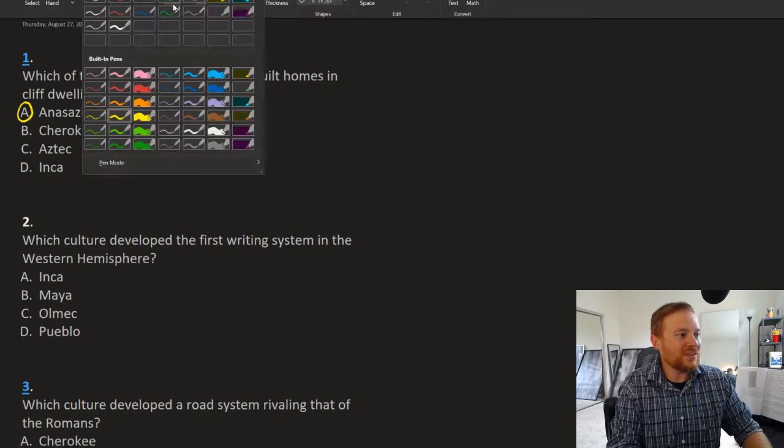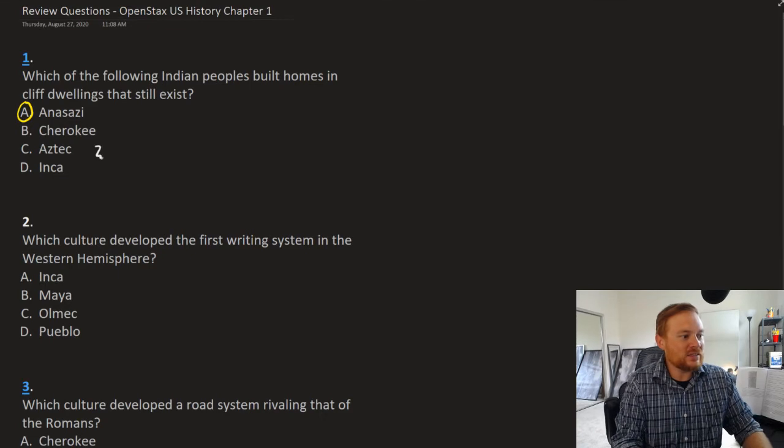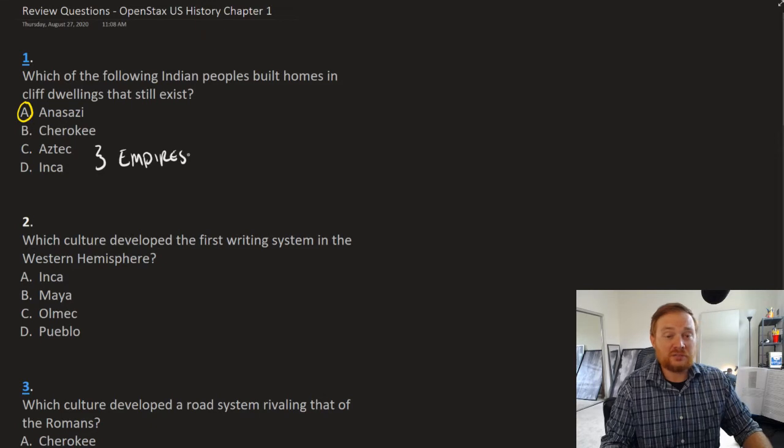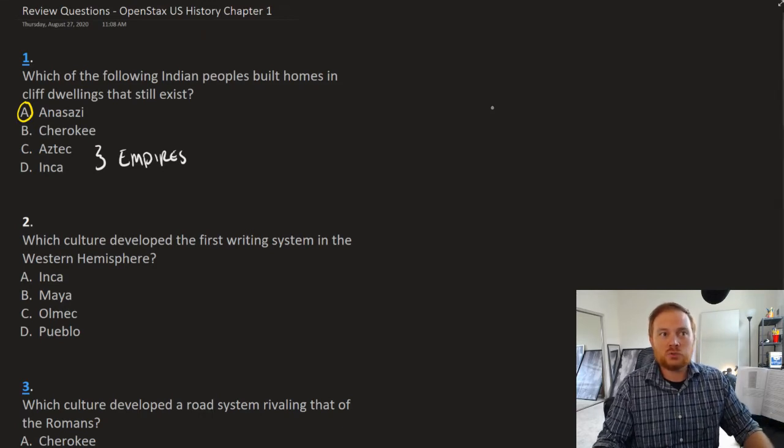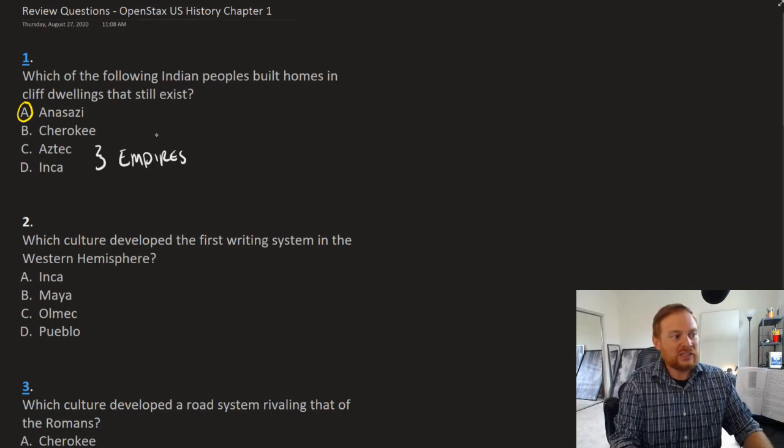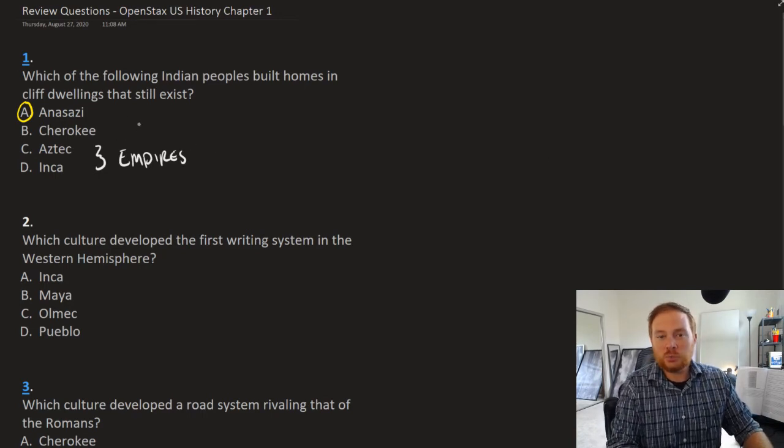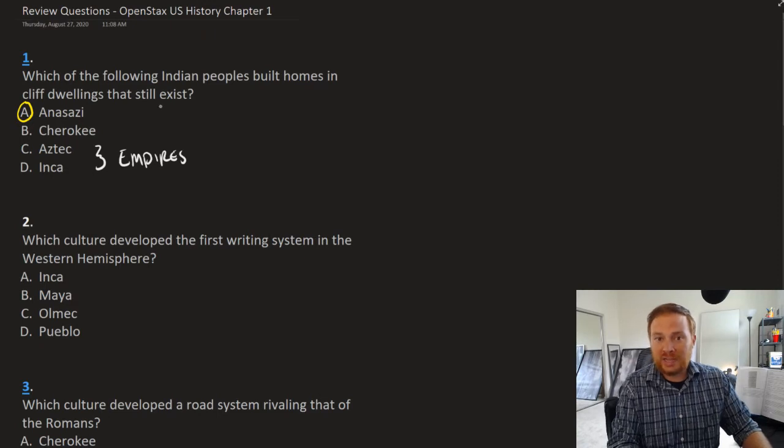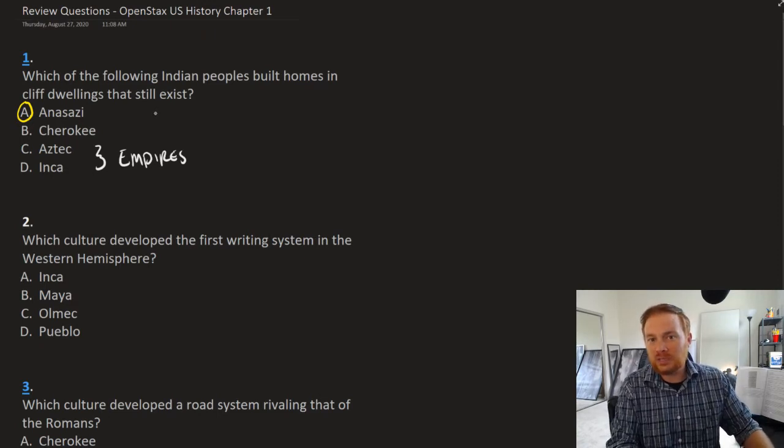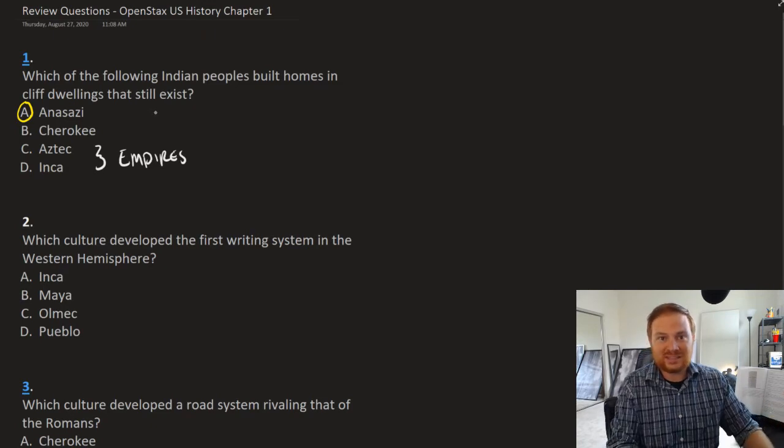Recall that both the Aztecs and the Incas, these are large empires in South America. As such, they have, in some cases, millions of people living within them. They cover large amounts of area. So it'd be pretty difficult for us to generalize what all people in those empires lived in. The Anasazi and the Cherokee are much smaller in terms of their political structure. They are tribal, so we can certainly make a generalization about how these people live or the type of dwellings that they live in.